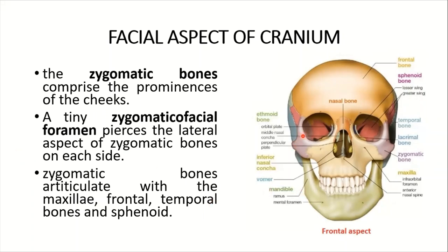The zygomatic bones comprise the prominences of the cheeks. A tiny zygomaticofacial foramen pierces the lateral aspect of the zygomatic bone on each side. The zygomatic bones articulate with the maxillae, the frontal bone, the temporal bone, and the sphenoidal bone.